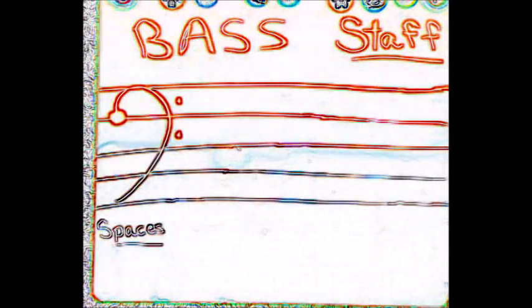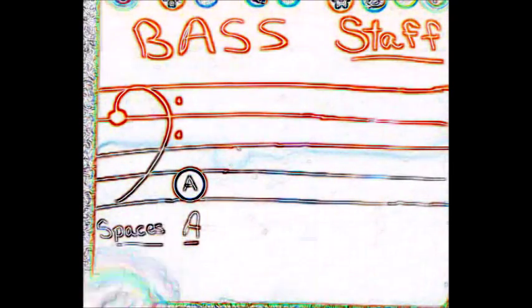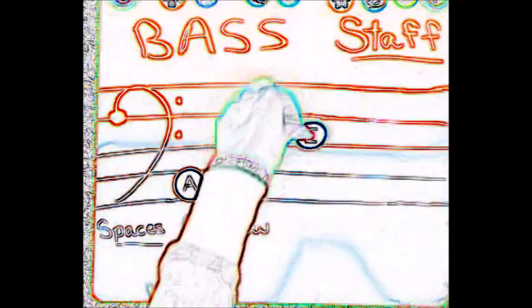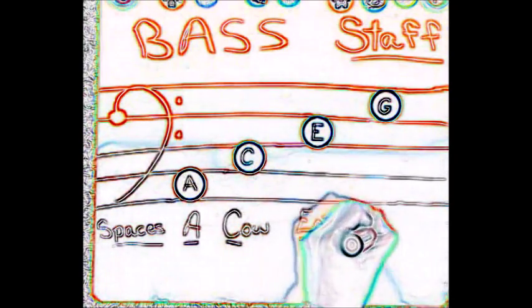Next, let's name the spaces and create a fun phrase. Space 1, A, all. Space 2, C, cow. Space 3, E, eats. Space 4, G, grass.